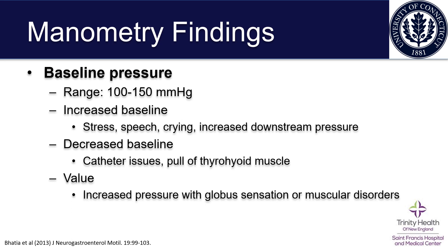Other things that will increase baseline pressure include downstream pressure — if the esophagus and cricopharyngeus is squeezing against an obstruction, that will increase the pressure at baseline. Alternatively, decreased baseline pressure may be due to catheter-related issues or the pull of the thyrohyoid muscle. One study revealed that increased pressure compared to baseline is suggestive of globus sensation or potentially muscular disorders.